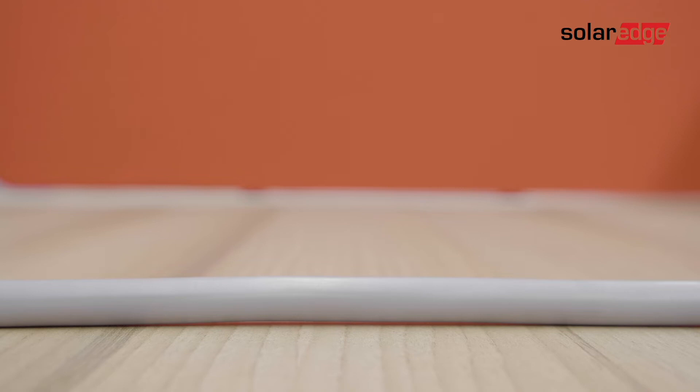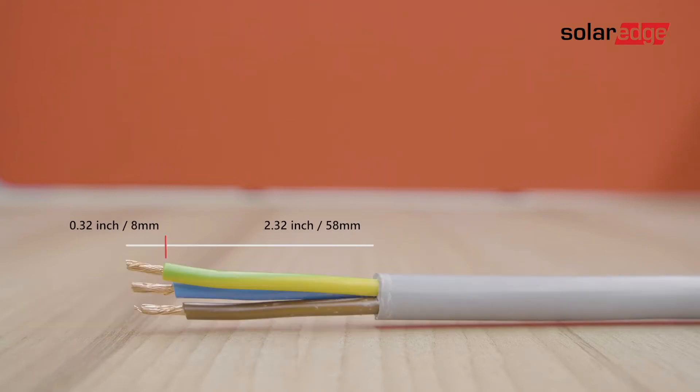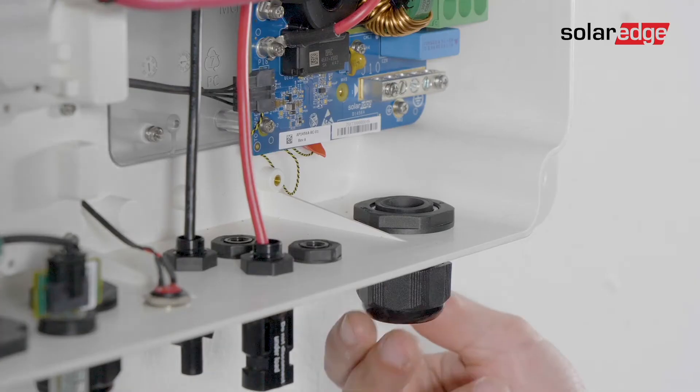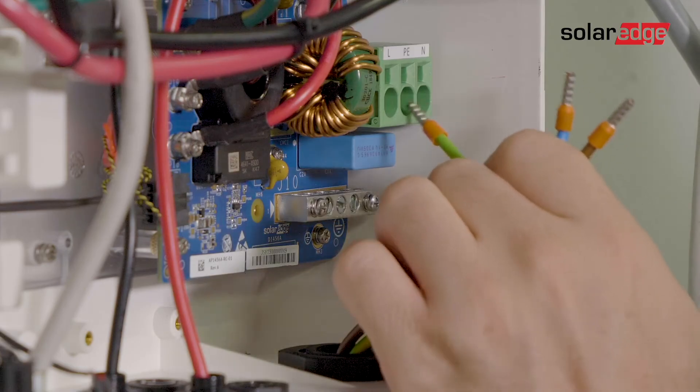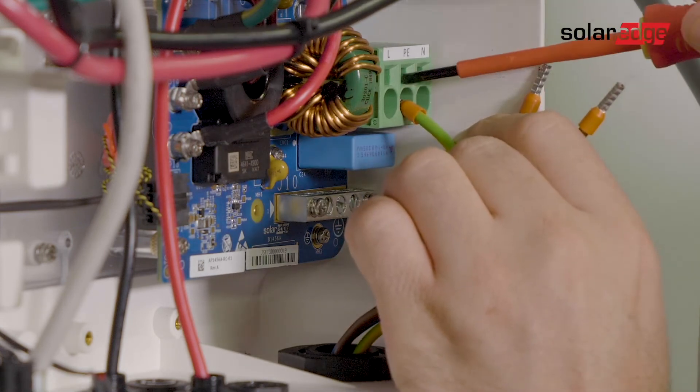Let's connect the AC grid cable. Strip the required length of the external and internal cables insulation. Open the AC cable gland. Connect the AC wires according to the labels on the terminal block.